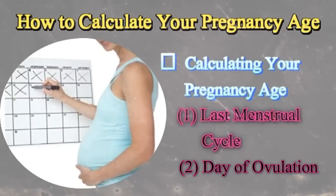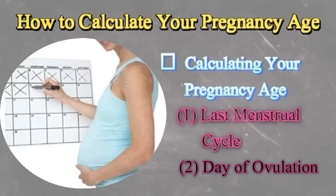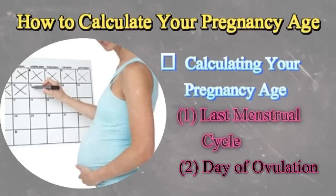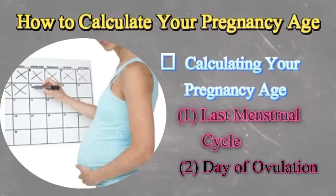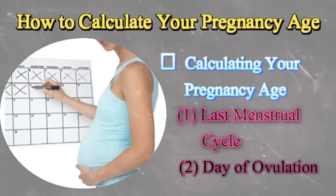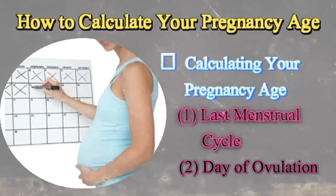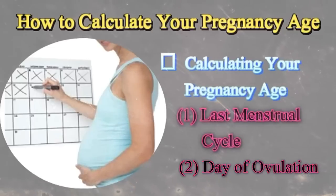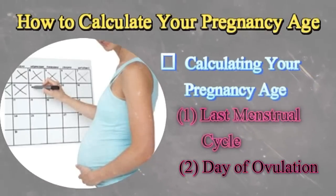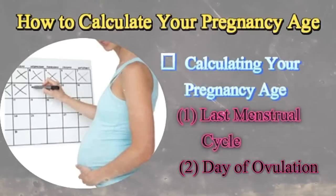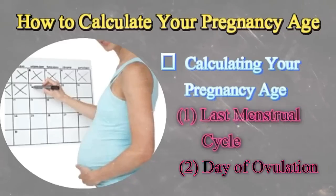Hence, when it has been three weeks since your LMP, you will count it as your first week of pregnancy. Likewise, when you end the first trimester of pregnancy, you will be 10 weeks pregnant instead of 12 weeks, and your due date will not be on week 40 but on week 38.